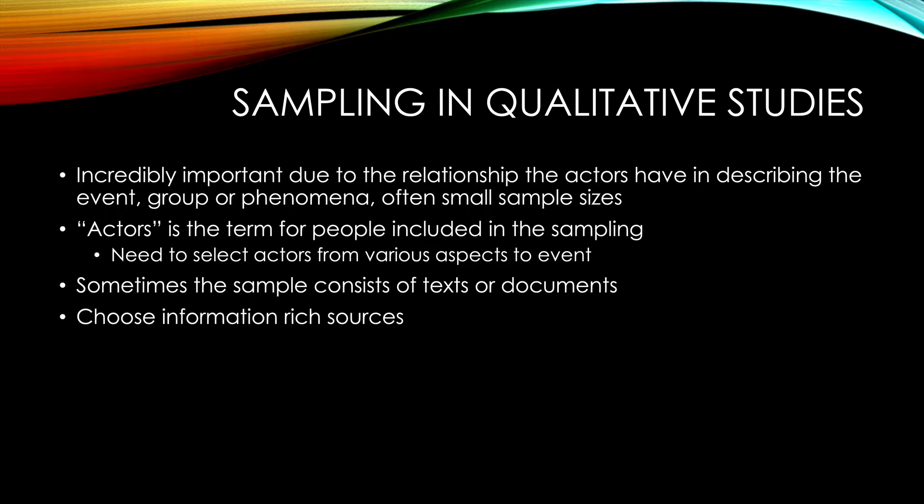Sampling in qualitative studies is important, and you want to choose people — called actors — that are central to the situation you're attempting to describe. In our example, if they interviewed all participants and asked why they decreased non-exercise physical activity, it wouldn't be as useful because we'd be including people who didn't actually decrease their activity. By choosing the people who failed to maintain their activity, we get better data. The term 'actors' is often used in qualitative studies rather than 'subjects' or 'participants.'